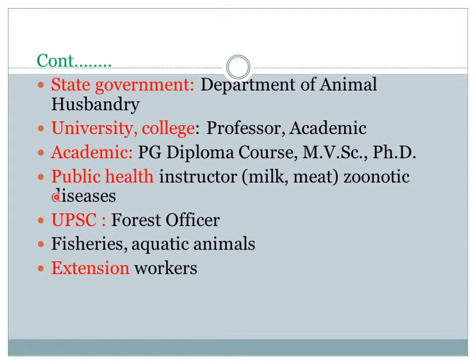A veterinarian can appear for the UPSC examination — Union Public Service Commission — and become a forest officer or other high-rank administration officer. Fisheries and aquatic animals also require appointment. Veterinarians can also be appointed in extension education work for the farmers and other persons as extension workers.